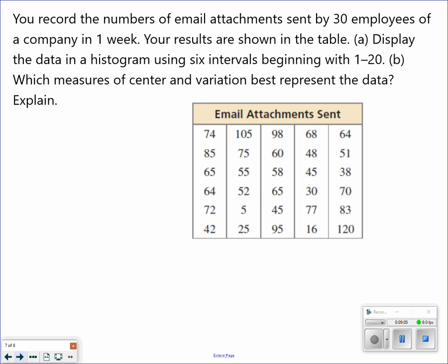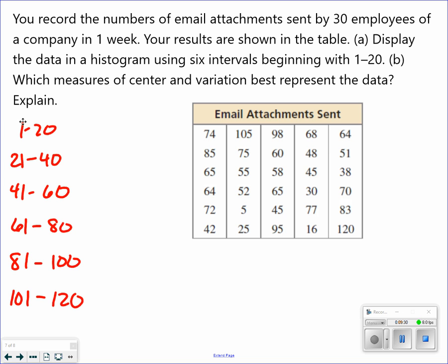Record the number of emailed attachments by 30 employees. Results are shown in the table. Display your histogram using six intervals. The first interval is 1 to 20. So, 1 to 20. So, now, remember, you're always going to have a 19. So, the next one's 21 to 40, 41 to 60, 61 to 80, 81 to 100, and 101 to 120. Now, I have to go through all the data and basically tally which one falls in which.